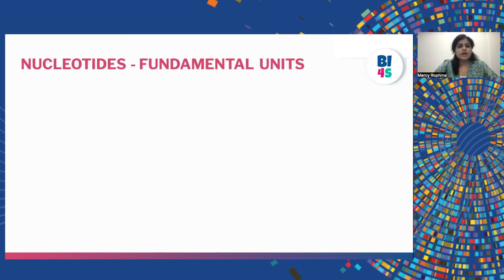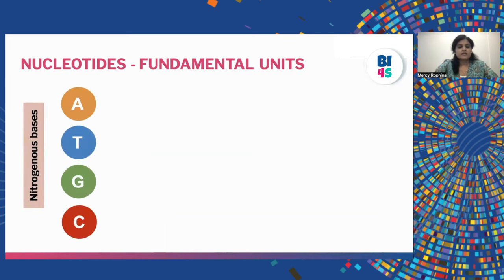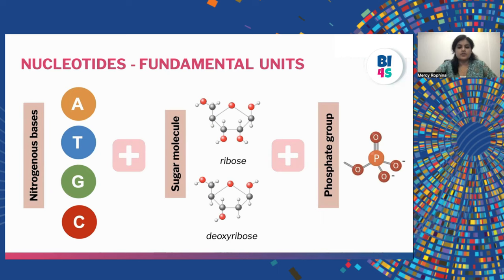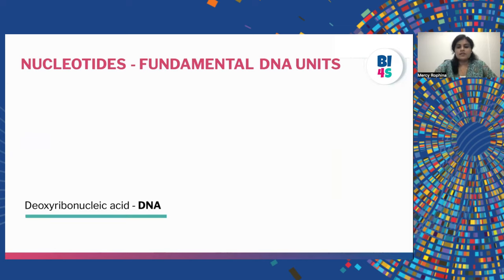What are these nucleotides and how are they made up? When we take each of these nucleotides, they are made up of three major components: the first being the nitrogenous bases, followed by the sugar molecules — this can either be a ribose sugar molecule or a deoxyribose sugar molecule — and finally we have the phosphate group.